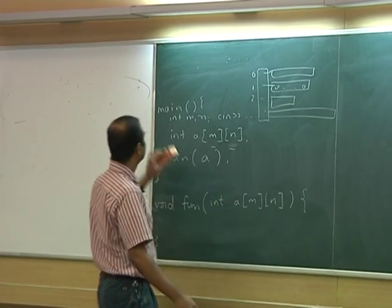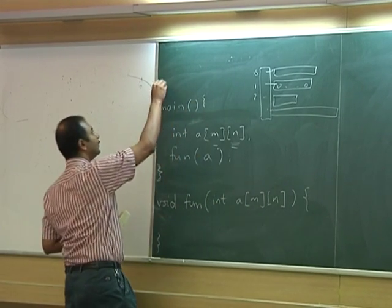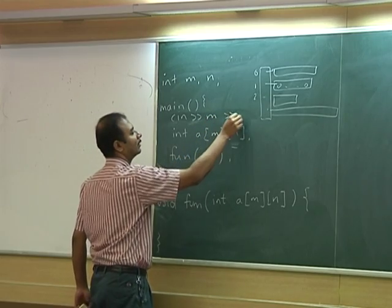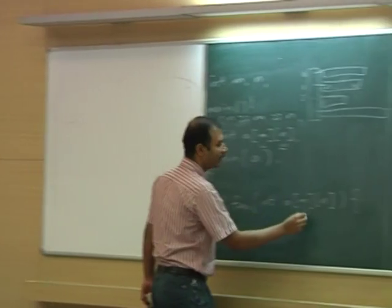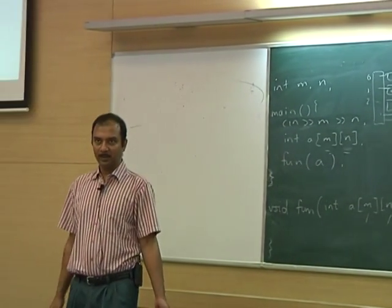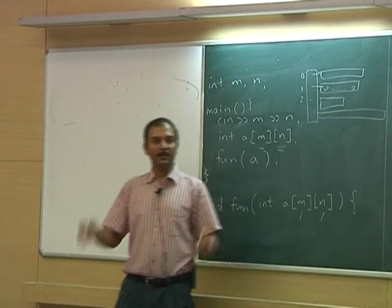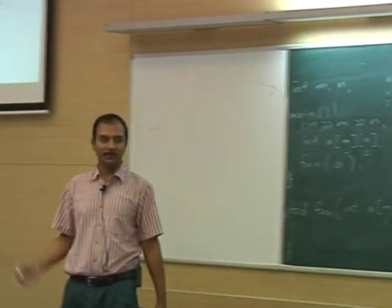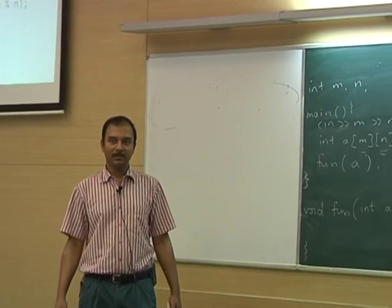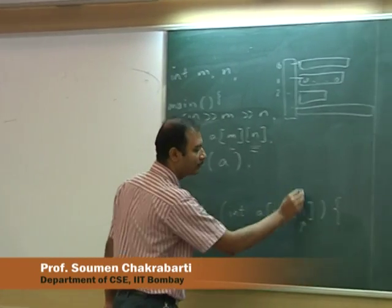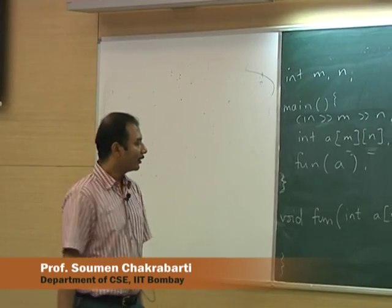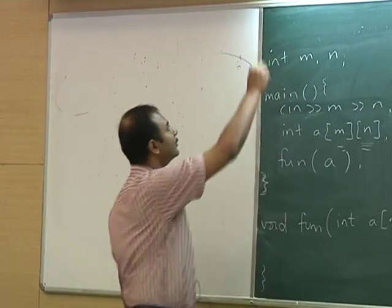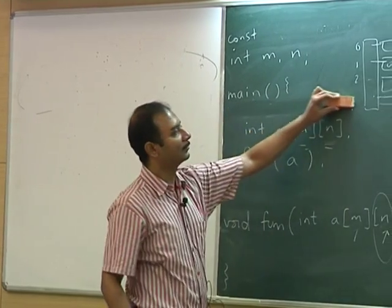If you want to move the declaration outside — say int m, n — but you read m and n inside main, even that is a problem. Although m and n as variables are known, their values are not known. Remember, 2D arrays are allocated in memory in row-major order. Unless you know the value of n, you don't know how to address cell (i, j). During compilation this will fail, claiming n is not a constant. Your only way of succeeding is to define n as a constant, but then you can't do that.